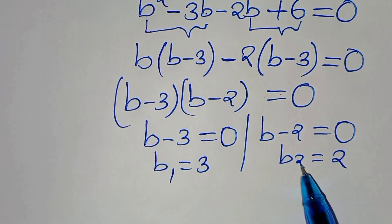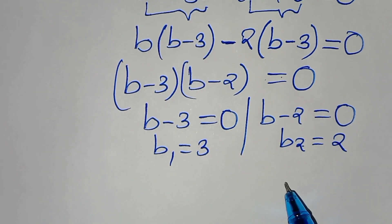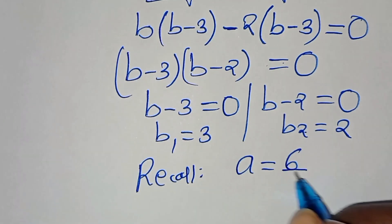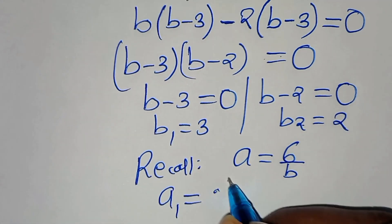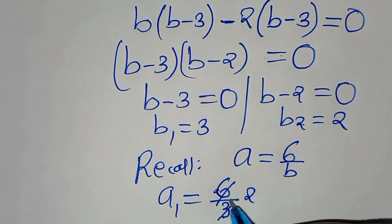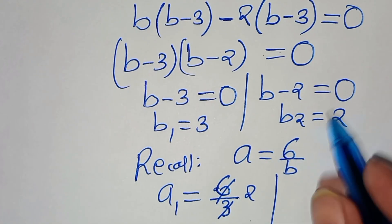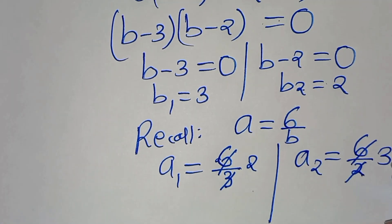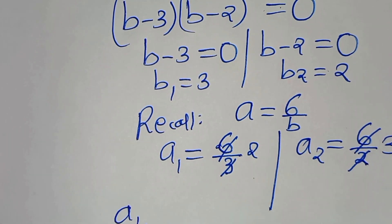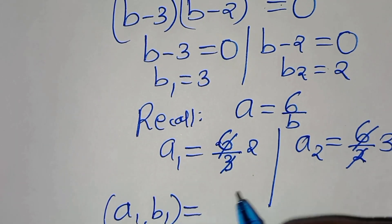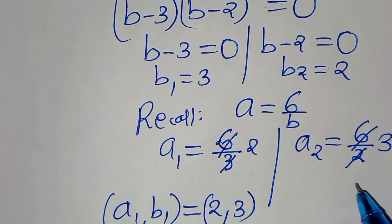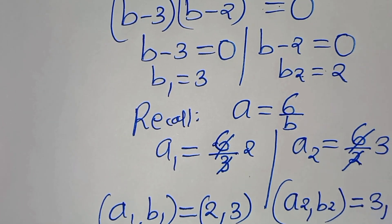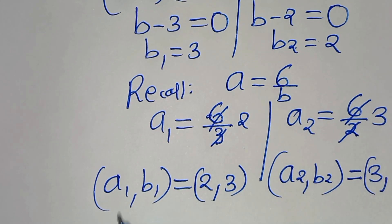Now let's find the corresponding values of a. Recall that a equals 6 over b. So a1 equals 6 over b1 equals 6 over 3, which gives a1 equals 2. And a2 equals 6 over b2 equals 6 over 2, which gives a2 equals 3. Therefore the first set of solutions is a1, b1 equal to 2, 3, and the second set is a2, b2 equal to 3, 2.